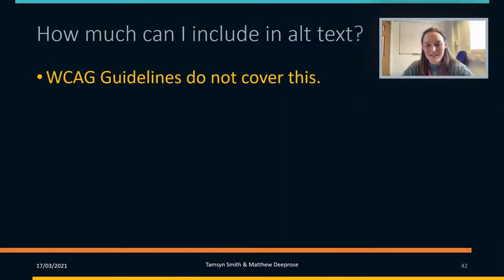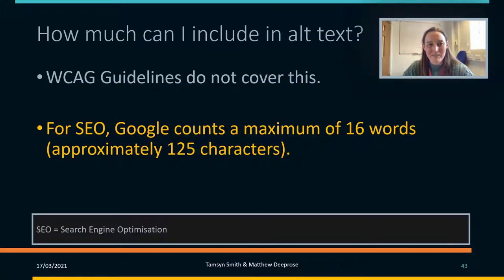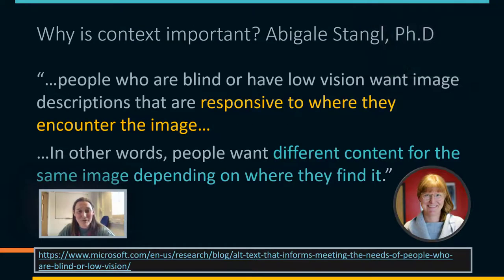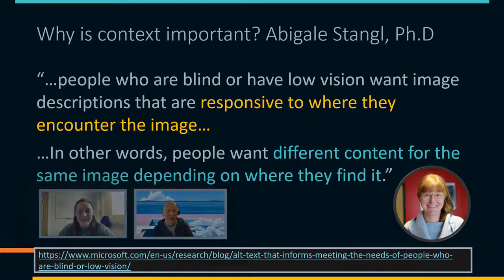How much can you include in your alt text? It's not covered by the WCAG guidelines, so we're guided by software and where alt text might appear. For search engine optimization, Google counts a maximum of six words, approximately 125 characters — not very much. But you should use as much text as is necessary to be effective, which can be quite tricky.